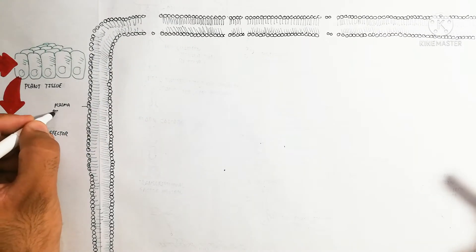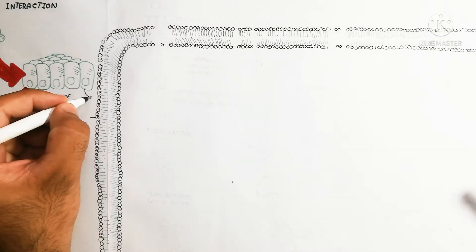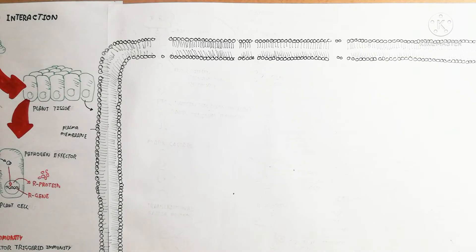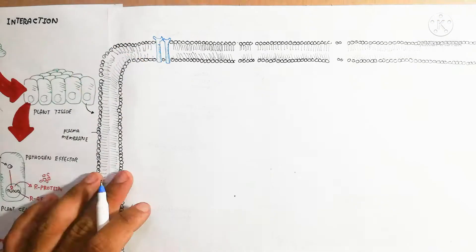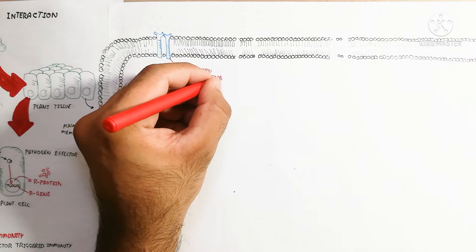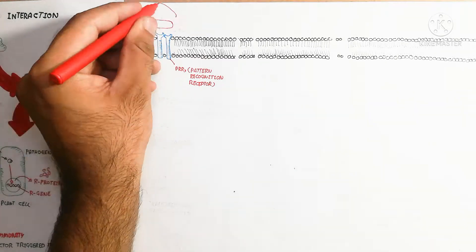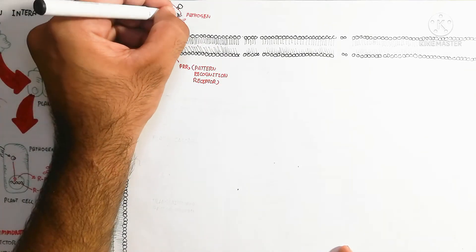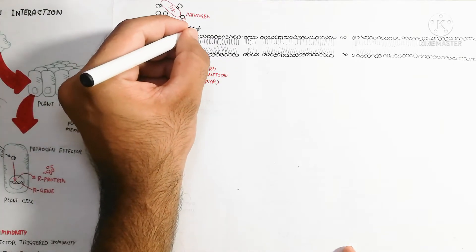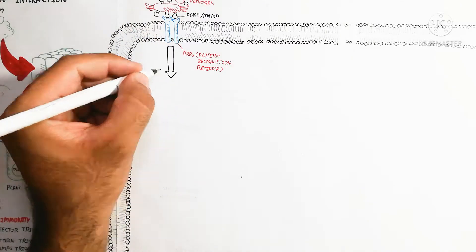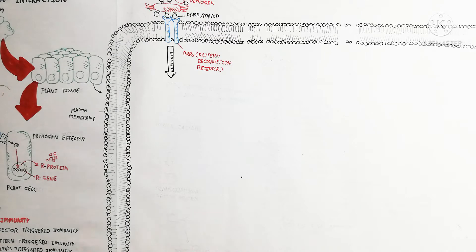PTI — pattern-triggered immunity, also known as PAMP-triggered immunity. Here is the plasma membrane of the cell; the upper layer is cellulose, which you should imagine. The plasma membrane is made up of a bilayer of phospholipids with phosphate groups. The PRR (pattern recognition receptor) on the plasma membrane recognizes the PAMP present on the pathogen, which binds with the PRR.